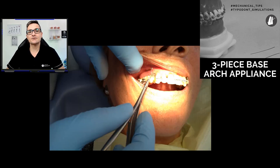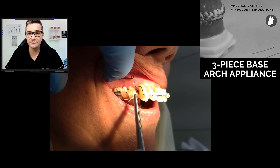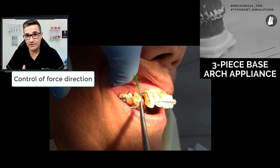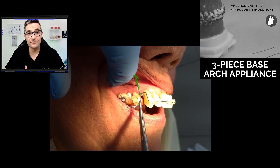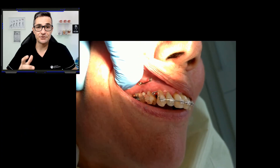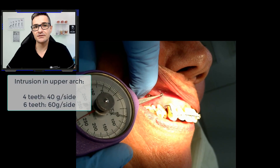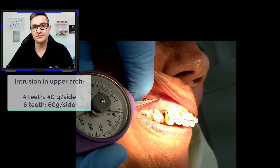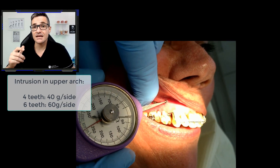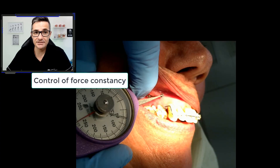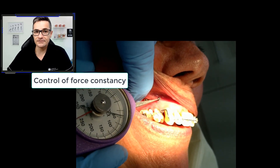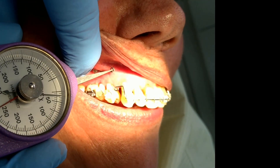I prefer cantilevers because we can control the force direction by changing the angle of the ligature tie. Note that the angle of the ligature tie represents the direction of our force. Besides the force direction, there are two more force parameters you should control in order to get a physiological and effective tooth movement. After choosing the line of action of the force, you will check the magnitude of the force with a tensiometer. These are the recommended values for four or six upper anterior teeth. It's very important to keep force values as low as possible.